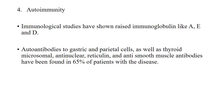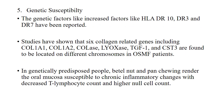Autoimmunity: various immunological studies have shown raised immunoglobulins A, E, and D. Autoantibodies to gastric parietal cells, as well as thyroid microsomal, anti-nuclear, reticulin, and anti-smooth muscle antibodies have been found in 65% of patients with the disease. Genetic factors such as HLA DR-10, DR-3, and DR-7 have also been reported in OSMF.